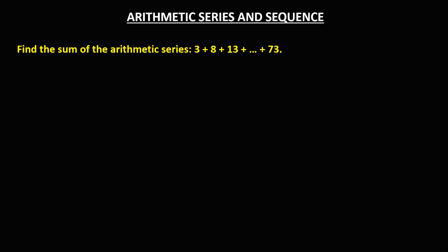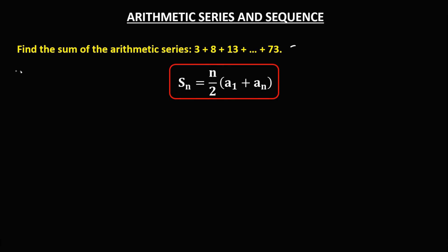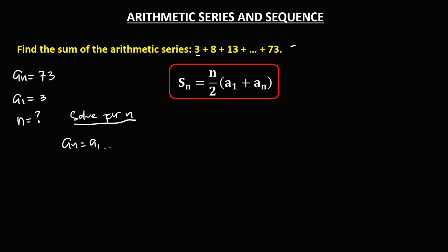For this problem, we need to find the sum of the arithmetic series. The sum formula uses n, a sub 1, and a sub n. From the given values, a sub n is 73 and a sub 1 is positive 3. There is no given number of terms, so we need to solve for n first, using the formula: a sub n equals a sub 1 plus (n minus 1) times d.